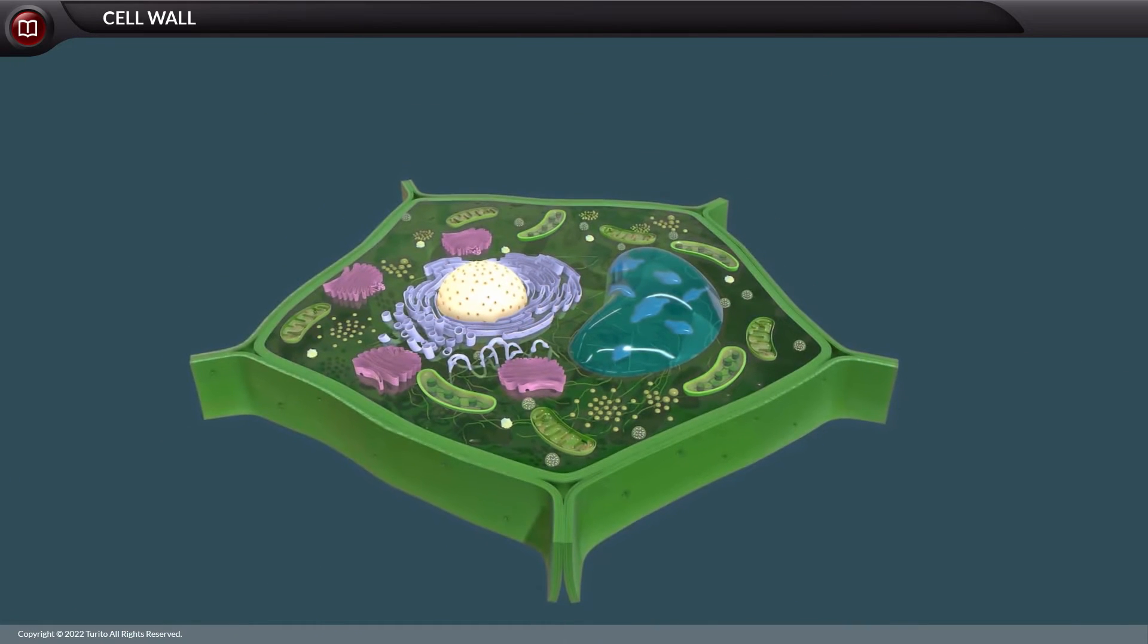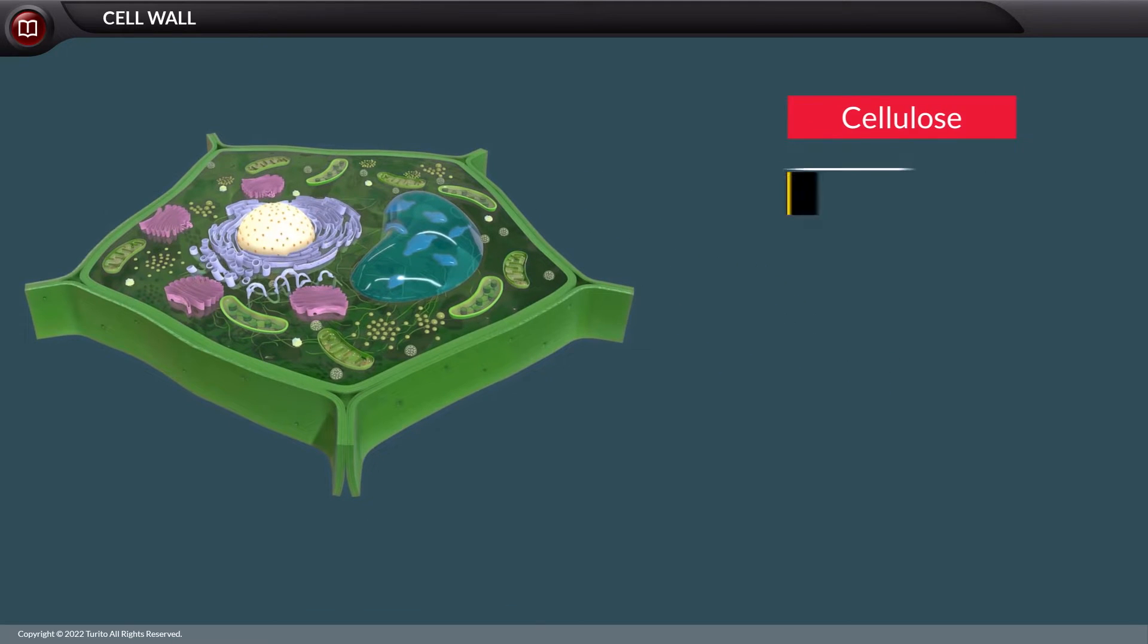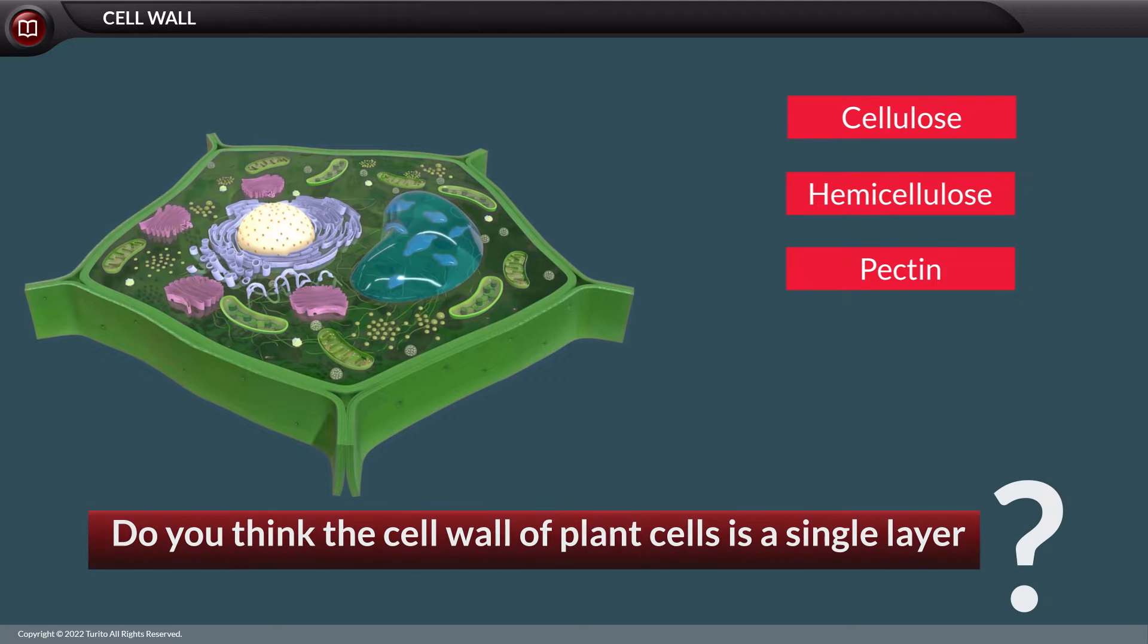Talking about the composition of the cell wall, in plants, it is composed of chemicals like cellulose, hemicellulose, and pectin. Do you think the cell wall of plant cells is a single layer?